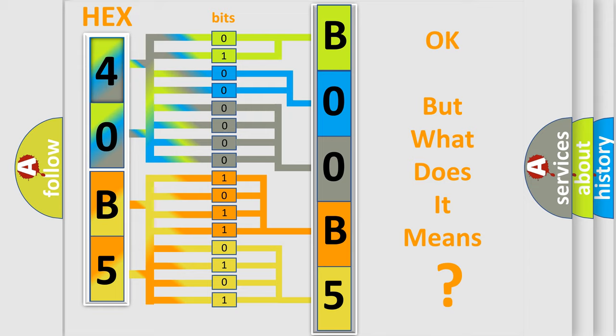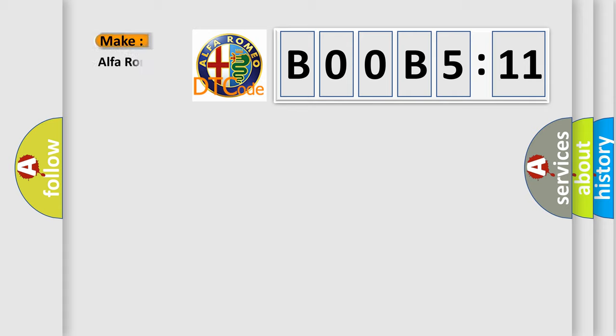The number itself does not make sense to us if we cannot assign information about what it actually expresses. So, what does the diagnostic trouble code B00B5:11 interpret specifically for Alfa Romeo?